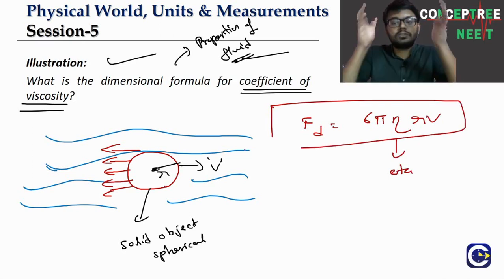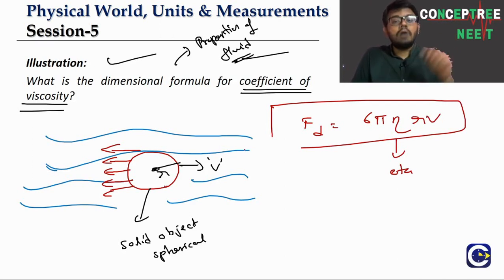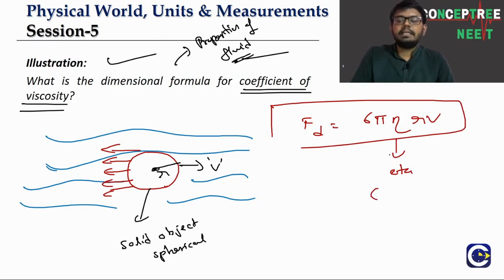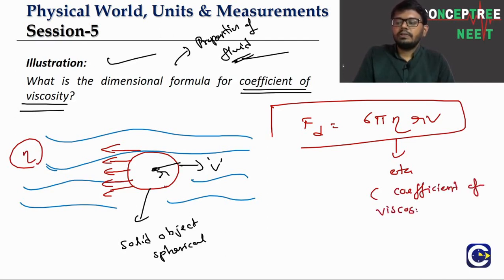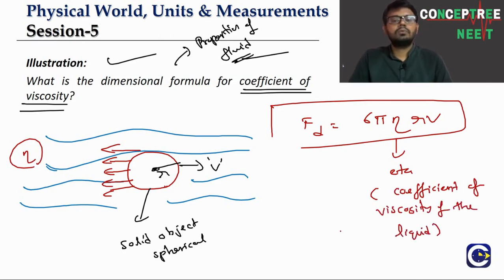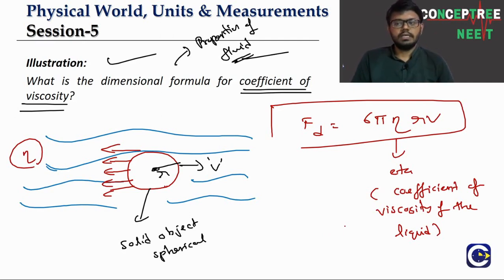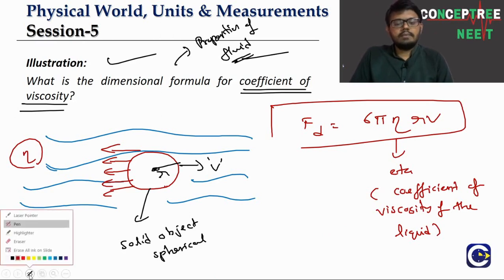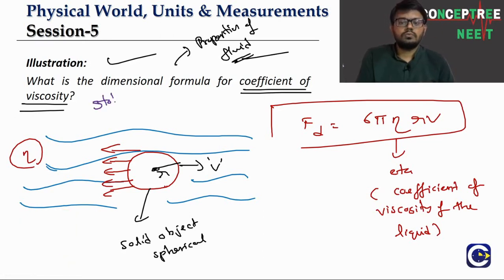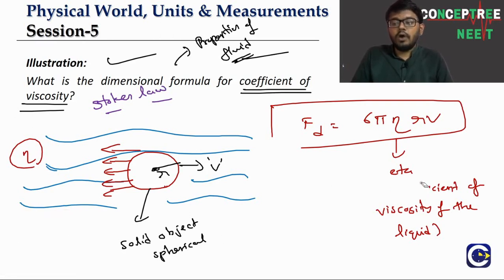Suppose we have a spherical solid object with radius r moving with velocity v inside a fluid. There will be a drag force acting on it in the backward/opposite direction. This drag force is given by Stokes law: F = 6π η r v, where η (eta) is the coefficient of viscosity of the liquid.